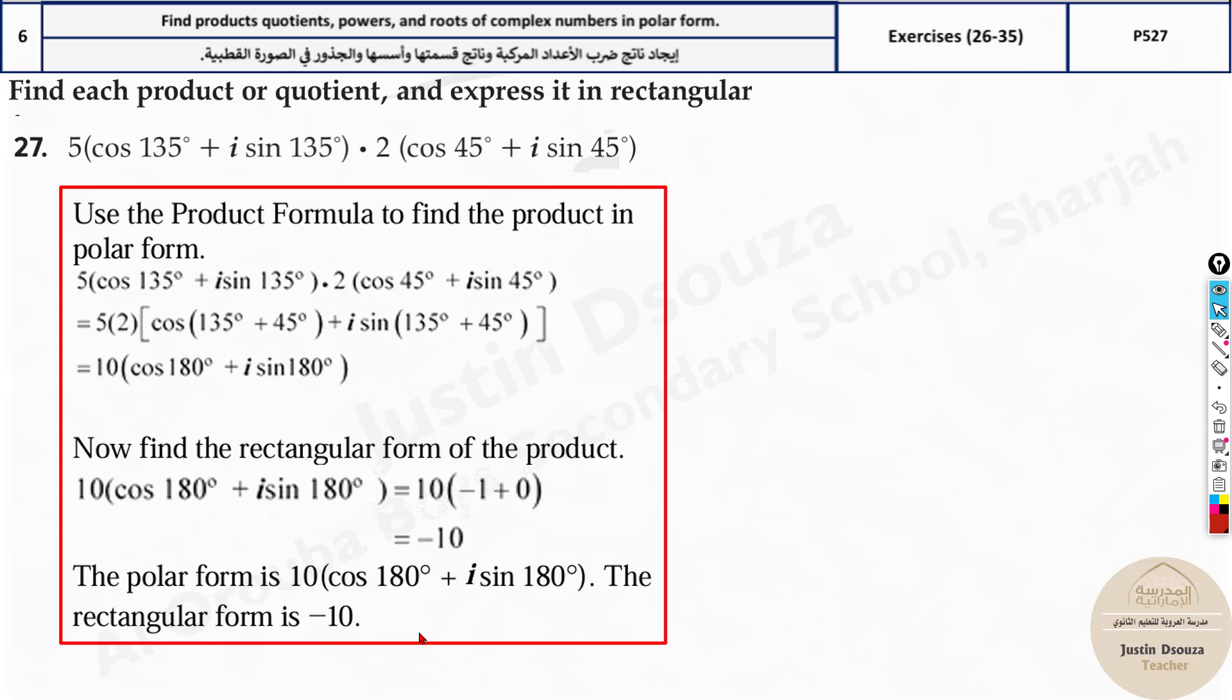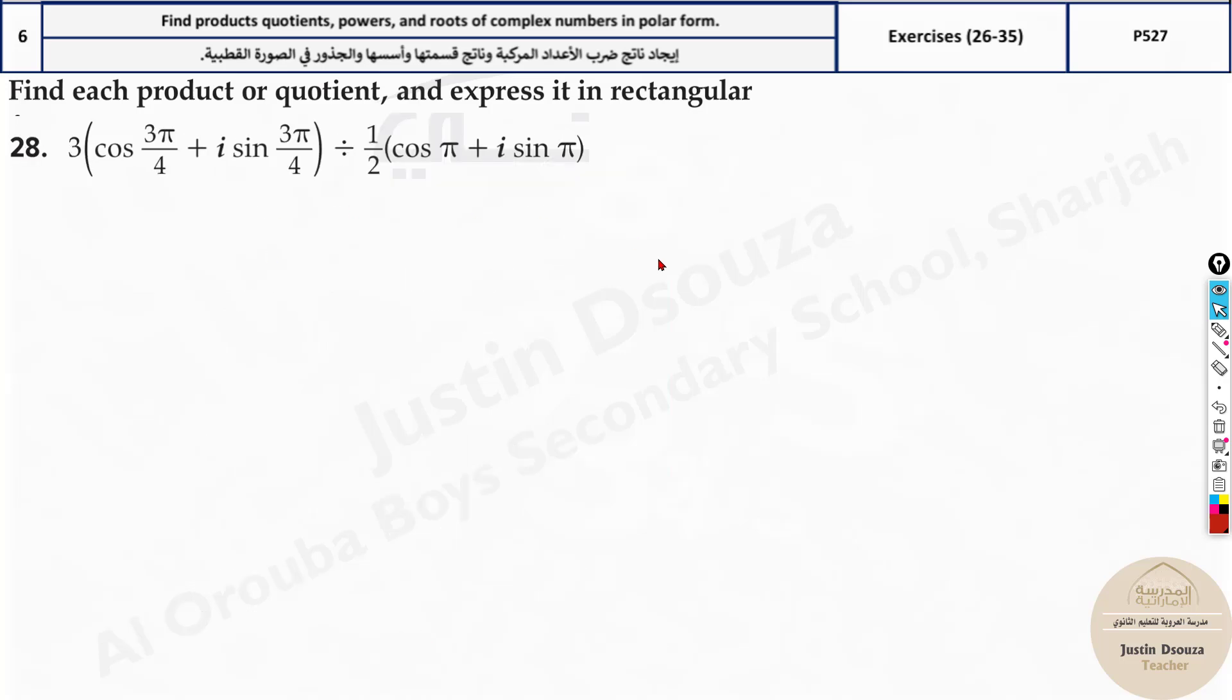It's not the part divided. Now, we have division. So, let's do this problem. Same concept, but the formula is different. It is R1 by R2. Over here, we have cosine theta 1 minus theta 2. And over here, it's plus between them. I sine theta 1 minus theta 2. So, this is the formula.